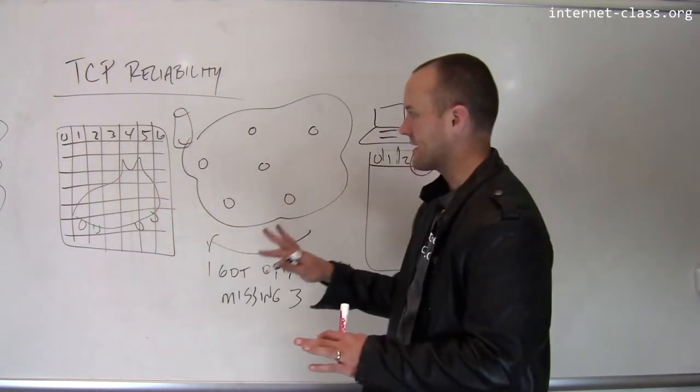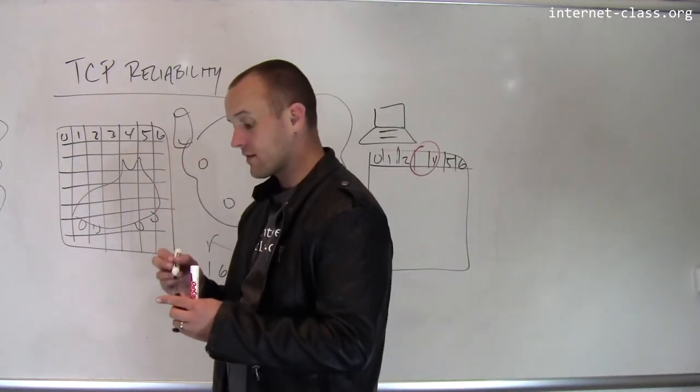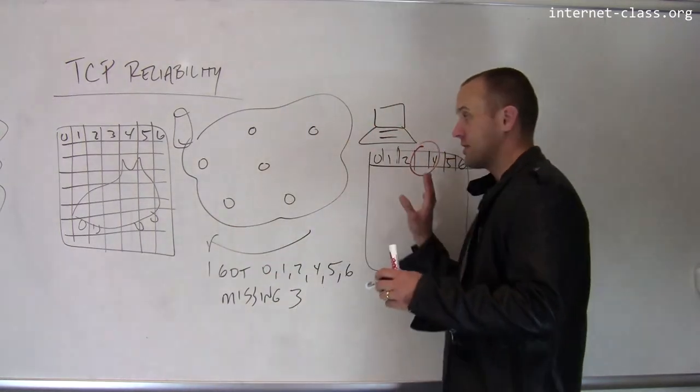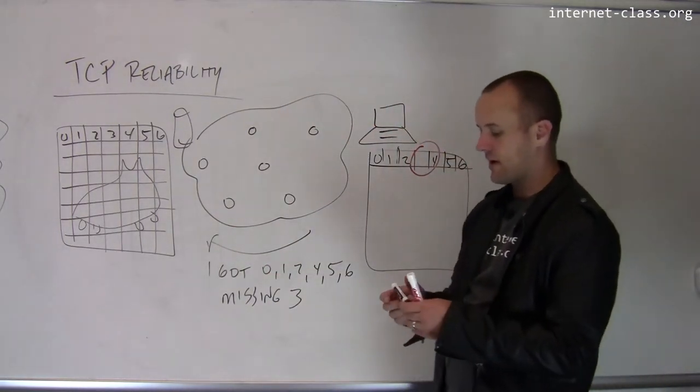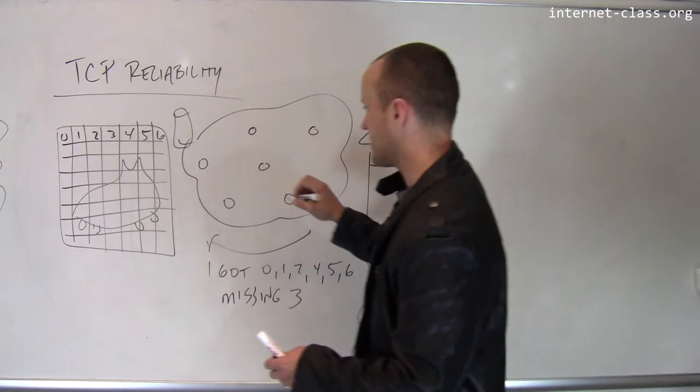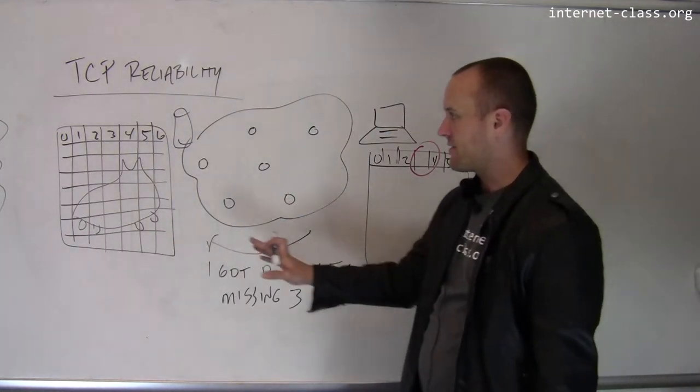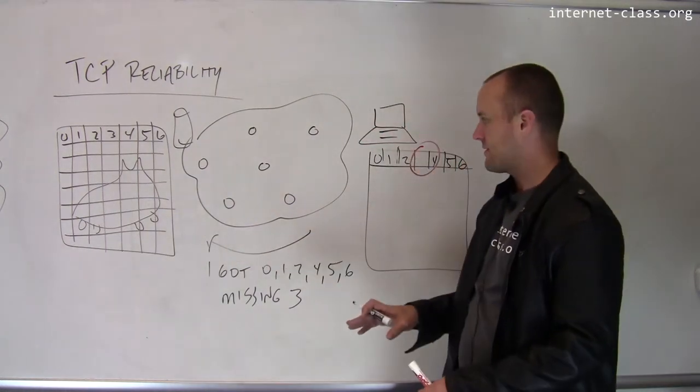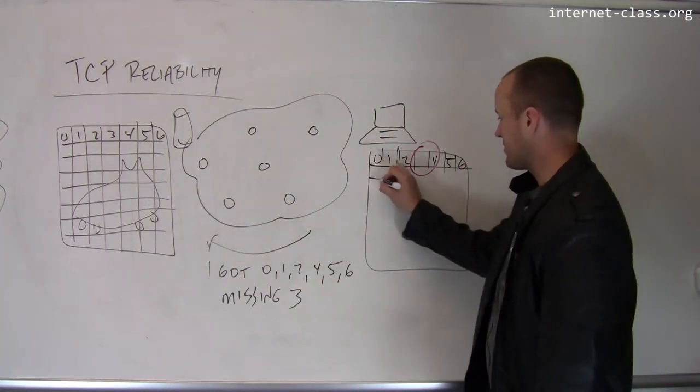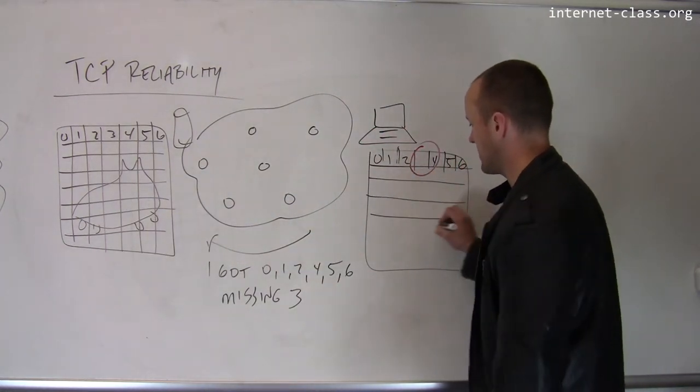So it sends this information back to the sender, and then the sender can say, okay, well, I want to make sure that all the content gets to the receiver, and so I'm going to retry, I'm going to resend this packet three, and hopefully this time packet three will get there. And we repeat this process for all the packets that are part of this image until the receiver is able to reconstruct the entire image.